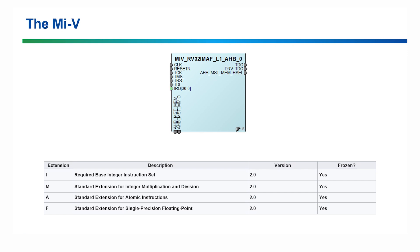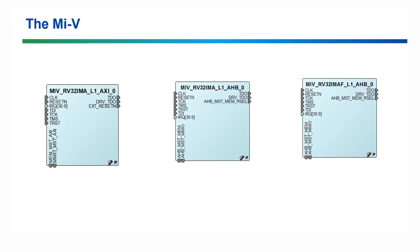There is one thing to mention: if you have a core that's for example an RV32-IMAFD, you can actually call this core an RV32-G. The G stands for general purpose, and you can still have other extensions after it, but it is simply the IMAFD grouped together. Now that we know what the first two chunks of the naming convention mean — first that it's a MiV, second that it's a 32-bit RISC-V core, and third what extensions it has — let's look at what the L1 is and the difference between AXI and AHB.